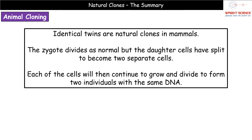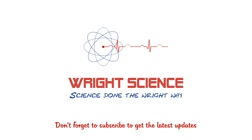Now we consider the techniques that animals use. In familiar mammals like humans, natural clones occur in the form of identical twins. The zygote — that fertilized cell — divides as normal, but at some point in those divisions it splits into two separate cells. These two individuals then grow and divide to become two complete offspring with identical DNA, because they originated from the same egg and same sperm, making them genetically identical to one another.